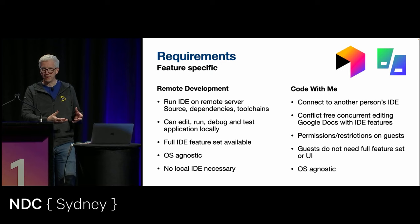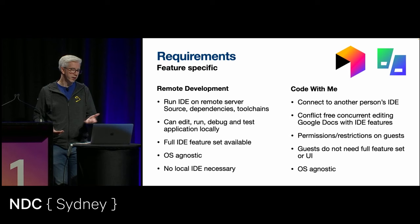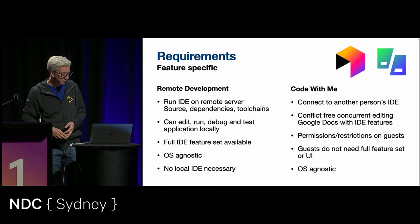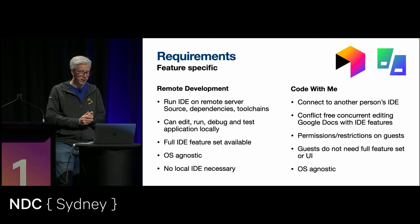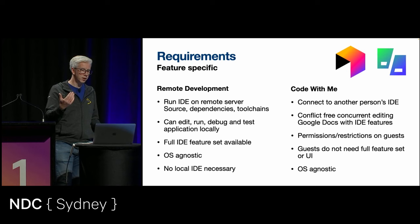We need to think about what these things need to do — the requirements for this client and the new architecture. For remote development, we want to run the IDE on a remote server, keep all of your source, dependencies, toolchains, and compilers on that remote server. But you want to edit, run, debug, and test the full lifecycle locally. We want it to be operating system agnostic — run the client on any OS we already support. You don't want to be tied to the server's OS. And we want no local IDE installation necessary, since one reason for using remote development is using a less powerful machine.